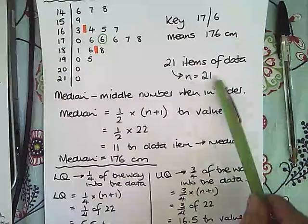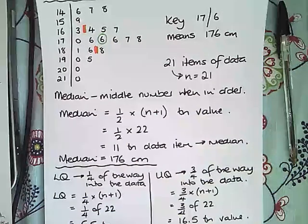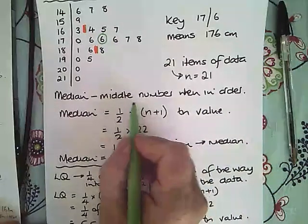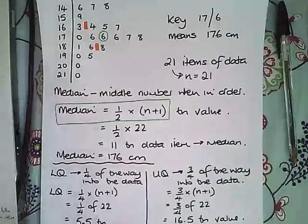We need to know how many data items we've got. This is our n number, and to find the median we use this formula: the median is 1/2 of the n plus 1 value.